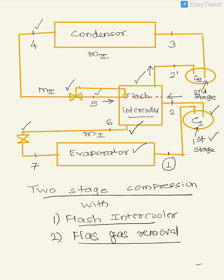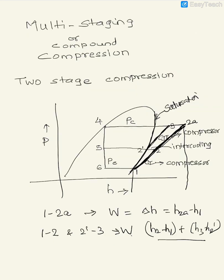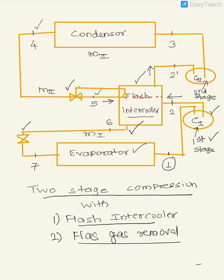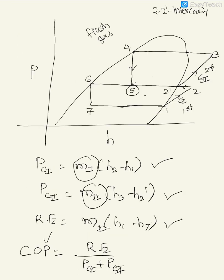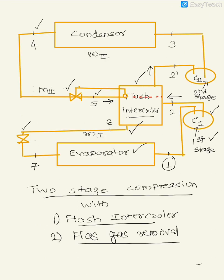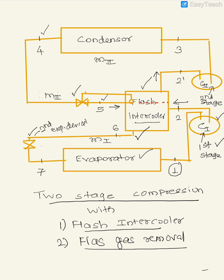From state 5 to 6, the flash gases are removed, and the refrigerant enters the second throttling device at state 6. This is the second expansion device, and you see that the entry to this second throttling device is a saturated liquid. So at state 6, the flash gases have been removed because of the flash intercooler, and those flash gases have gone to compressor 2.